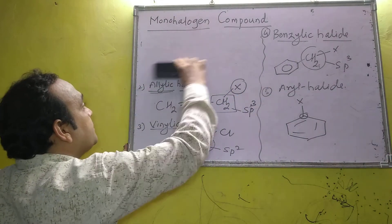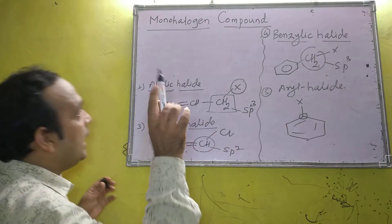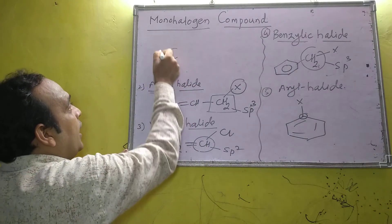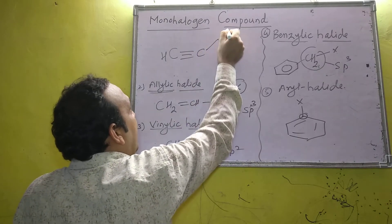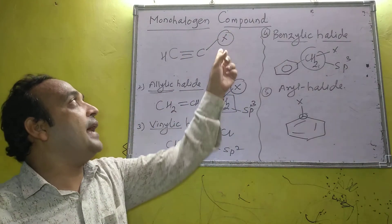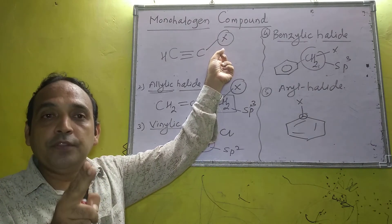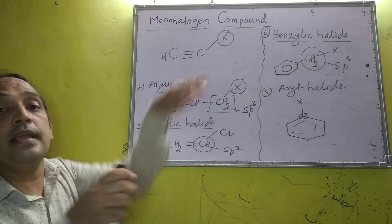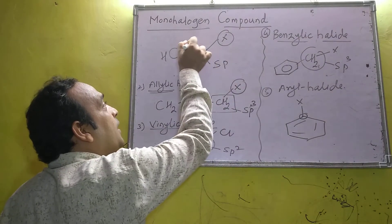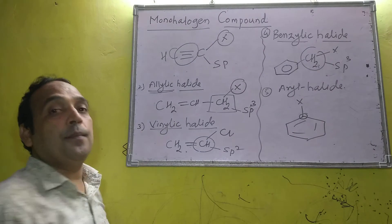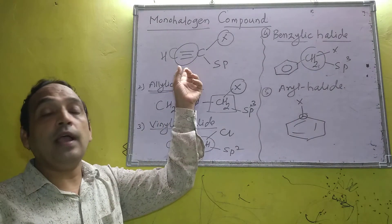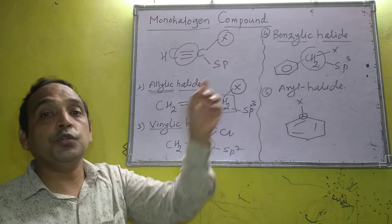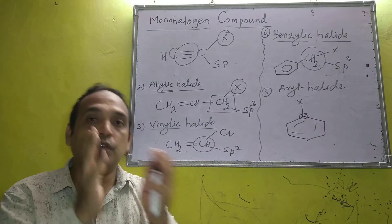Let me write one example: C≡C with X. Here X is attached to an SP carbon — because a triple bond is present. This is the best example of haloalkynes. In haloalkynes, the halogen atom is attached to an SP carbon. This is the big classification of our topic — halogen derivatives.